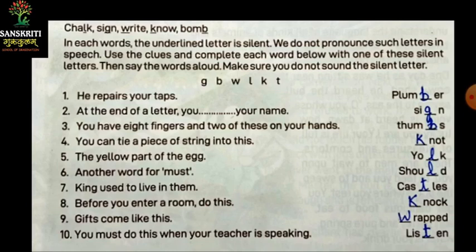Next: the yellow part of the egg. Joh egg ka yellow part hota hai, usko hum kya bolte hai? Yolk. To usmein kya silent hai? L. Next: another word for must. Must ke liye kuch aur word kya ho sakta hai? Should. Ismein bhi dekhiye, L silent hai. To usmein phir hum L likhenge.